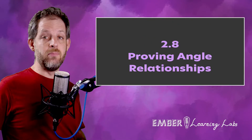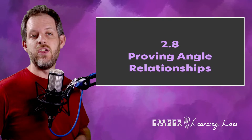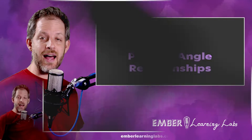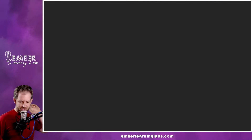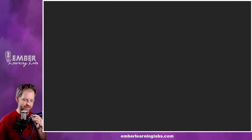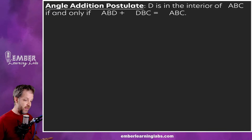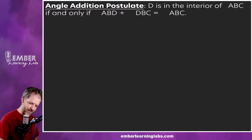Alright, this is going to be a big one — this is the last lesson of Unit 2 for geometry. We've got a lot to cover so let's dive right in. We've got some new postulates, we're going to do an example that's not a proof, and then we're going to do a proof to wrap things up. We've got a big chunk, so the first postulate we're going to talk about is...